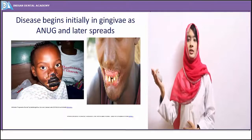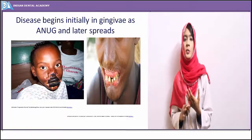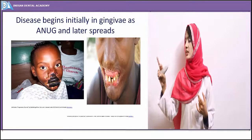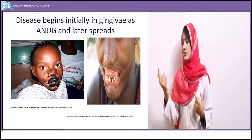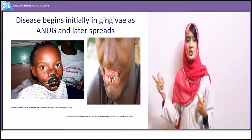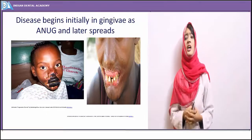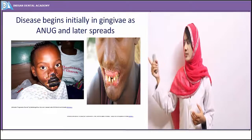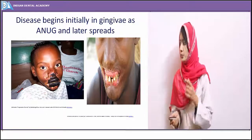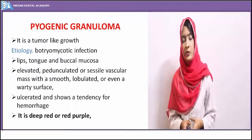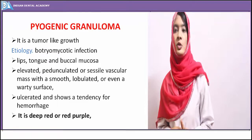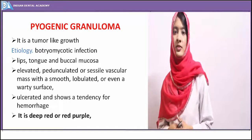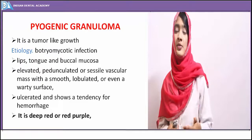Clinically, noma shows diffuse gingival involvement with characteristic involvement of the lips and jaws, and a line of demarcation between normal and gangrenous tissue. Treatment includes antibiotic therapy initiated as soon as possible and excision of gangrenous tissue to prevent spread of infection.